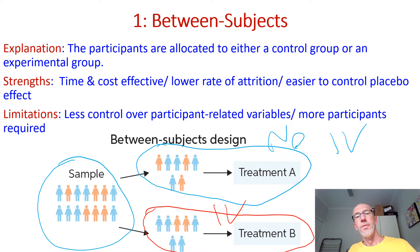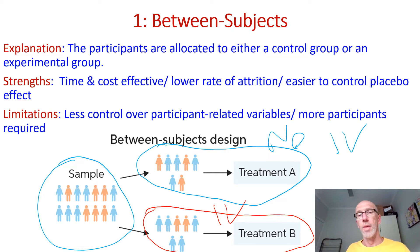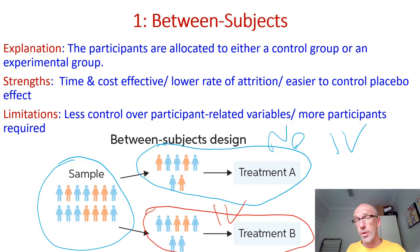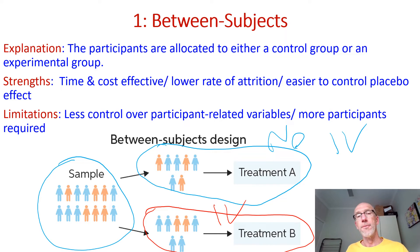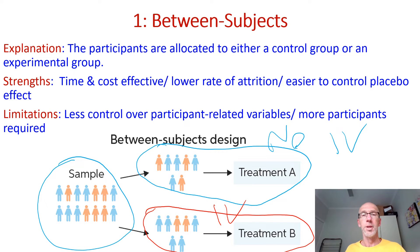The advantage of the between-subjects design is that it is more time and cost effective — it can generally be done in about half the time. We'll have a lower rate of attrition, possibly no attrition if it's an experiment done in one afternoon. And it is easier to control placebo effects, because if we use deception ethically, then potentially the participants in the two groups will have the same set of expectations before we debrief them at the end of the procedure.